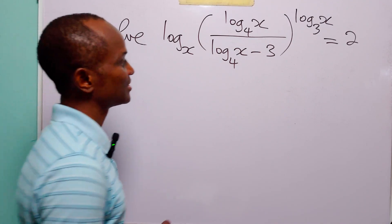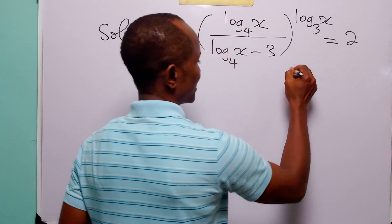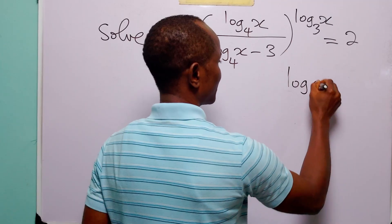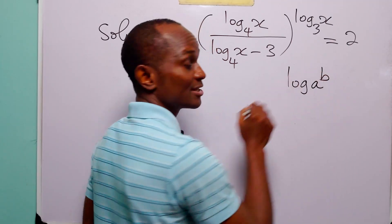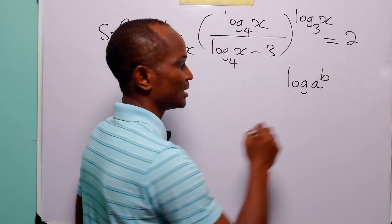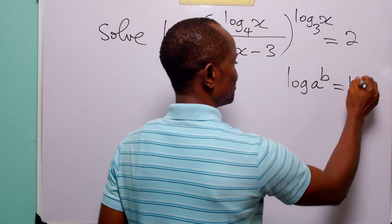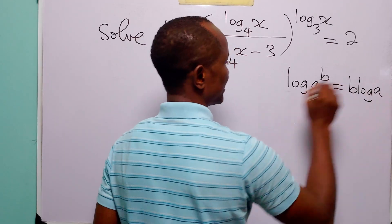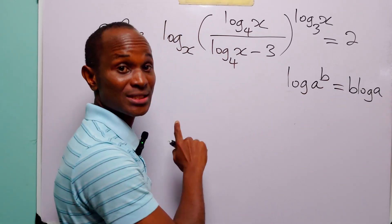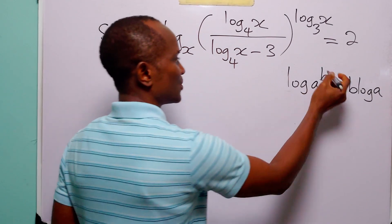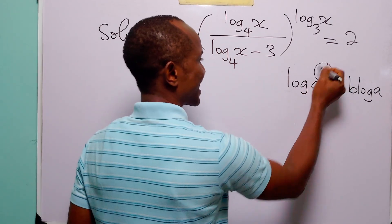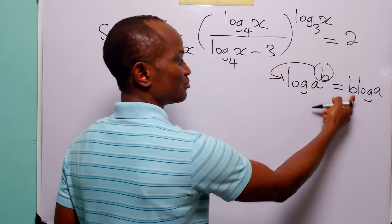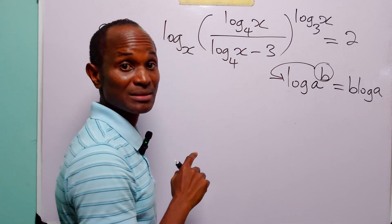The power rule is the rule that says that log a to the power b is equal to b times log a. That is, when we have a log term, we can bring down the exponent of a to the front of the log term to become a multiplier.